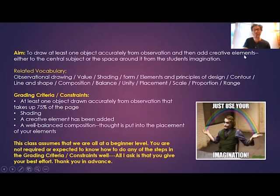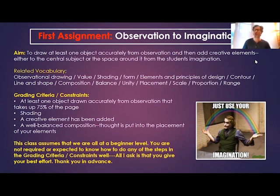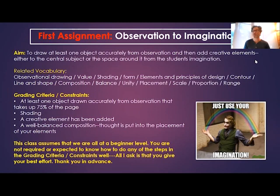This is going to be your first assignment. I've divided this curriculum into two main parts: the first part is focused on skill building, and the second part is focused on taking those skills and applying them to more conceptual assignments that will stretch your imagination. This first assignment is a combination of both — I call it the Observation to Imagination assignment. You'll choose one object and draw it realistically, capturing the shadows, the actual size and shape as accurately as you can. This tests your skill level so I can see where you're at.